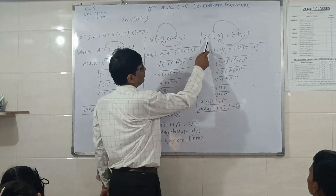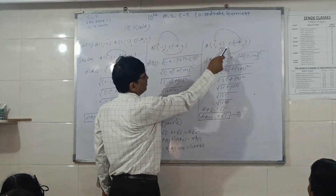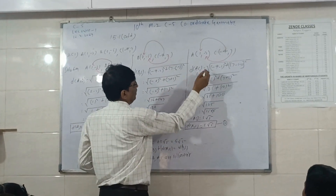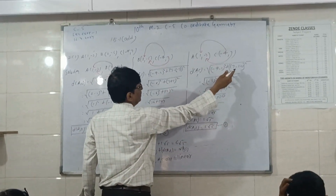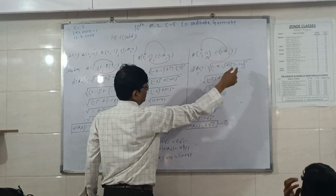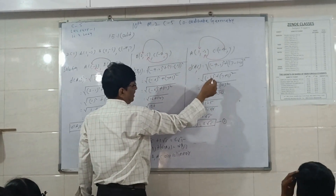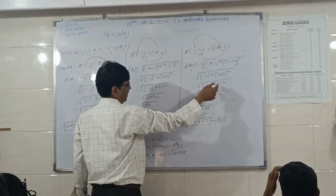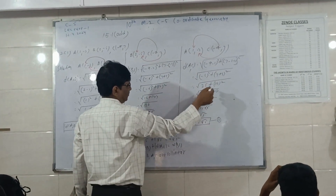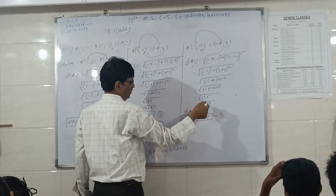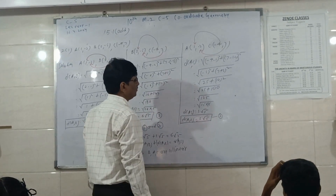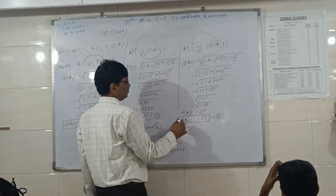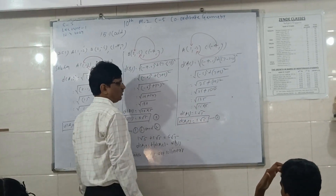Then distance CA is equal to: 1 minus 3, C is equal to minus 4, 7. So distance is equal to 4 minus 1, 7 minus minus 3. So 4 minus 1 minus 5 is the distance; 7 plus 3 is the distance. 85 plus 100 equals 129. 85 into 5. So distance is equal to 5 root 5.